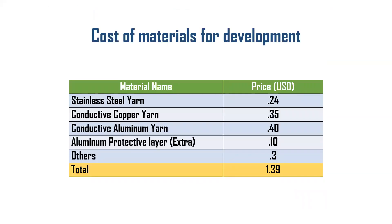The total cost of developing the radiation protective textile is only 1.39 USD, which is below 2 USD. If produced in bulk, the total cost will be even lower.